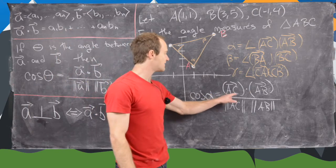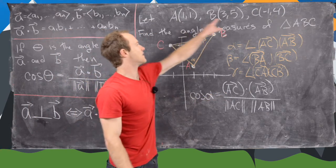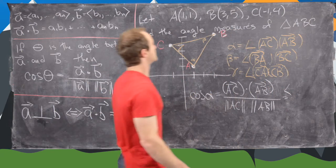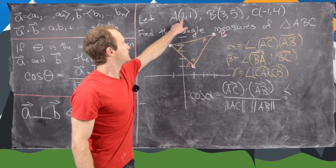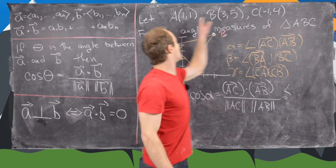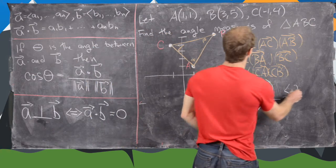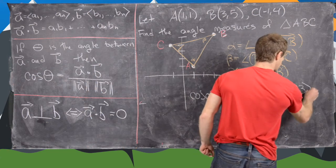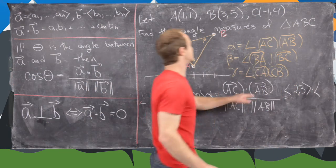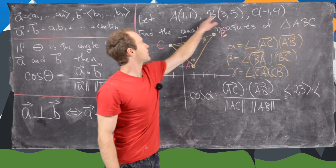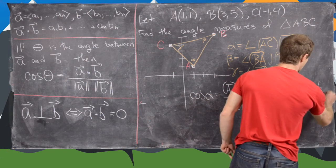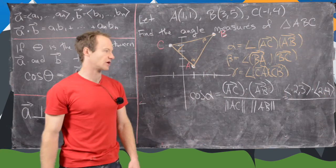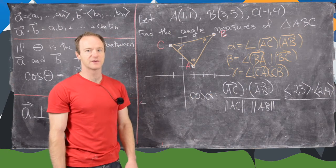But now we can find the vector AC by taking the difference of these two points. So notice that's going to give us, this component minus this component, so that will give us negative 2. And then this component minus this component, so that will give us 3. And then we have dot AB, so that will be 3 minus 1, so that's 2. And 5 minus 1, which is 4. So those are our two vectors.